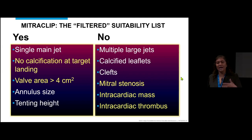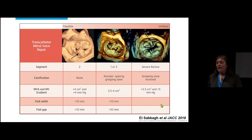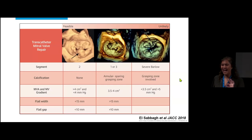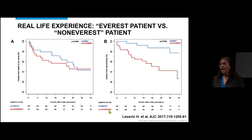We have to recognize that not everybody falls into the EVEREST criteria. Many patients referred for MitraClip don't have the ideal anatomy. The ideal is P2 scallop pathology, no calcification, big valve, low gradient, flail width less than 15 mm, and flail gap less than 10 mm. As any of those go out of whack, the valve becomes less likely to respond well to MitraClip. As the echocardiographer, I don't say 'not a candidate' on my report — I describe what I see and let the team decide the likelihood of success.